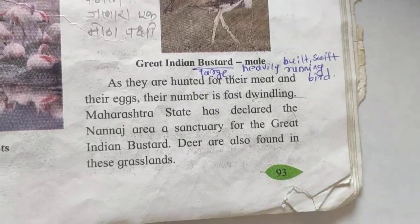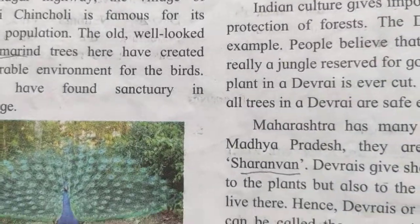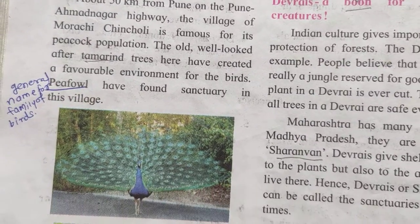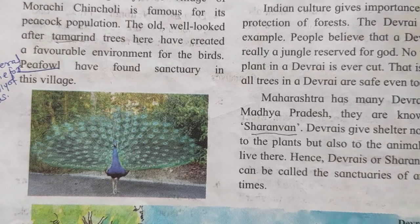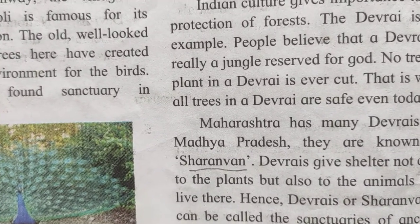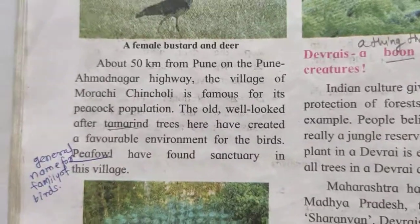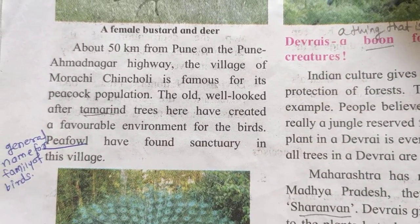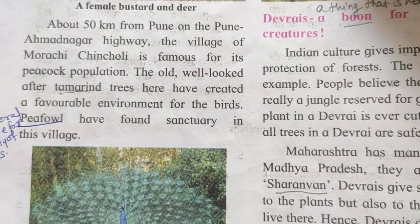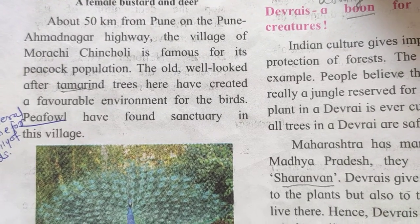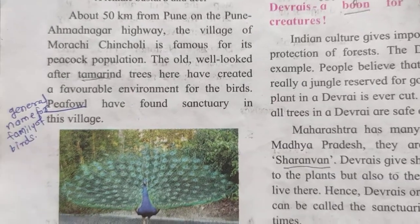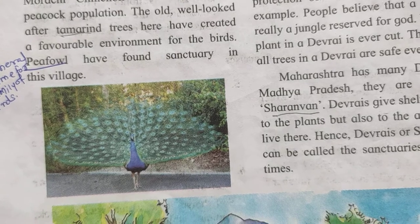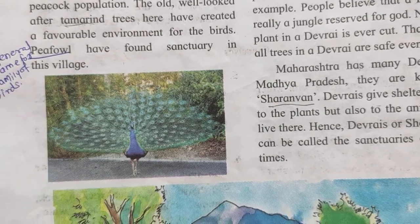One type of deer is also found in this grassland. About 50 kilometers from Pune on the Ahmadnagar Highway, there is a village called Morachi Chincholi, which is famous for the peacock. Peacocks are found there in great numbers. The old and well-maintained tamarind trees have created a favorable environment for the peacock, and the people of this village have given them sanctuary.